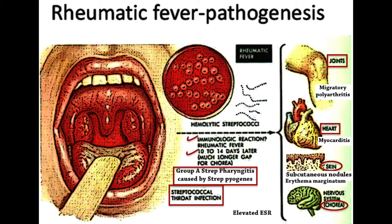Chorea can also occur as a major manifestation. Elevated ESR can also be commonly seen on lab findings.